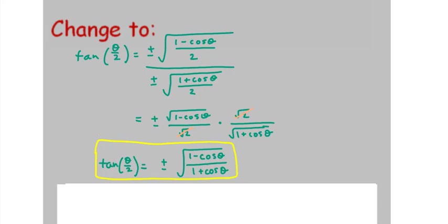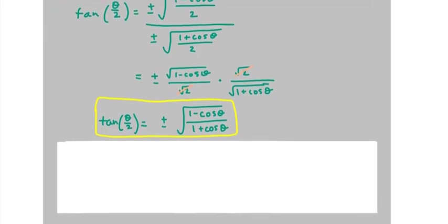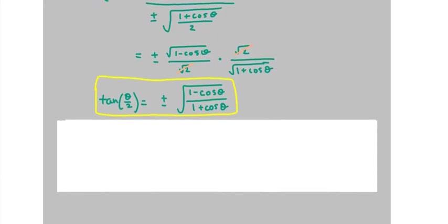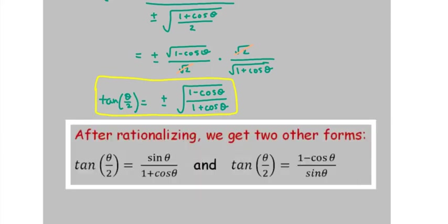We have a couple variations on this. You've heard of rationalizing the denominator — it's something we do all the time. If a person went through the algebra steps to rationalize the denominator, they would get a new version of this. And also, if we were to rationalize the numerator, we would get another variation. So that gives us two other tangent half angle identities, and each of them is much simpler than the original — they don't need a plus or minus sign and they don't need any radicals. So I would probably use one of these two others much more frequently than the first one.